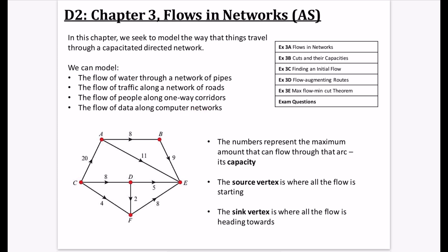It looks similar to things we've done in Decision 1, but we're talking about how things flow through the network. The numbers represent the maximum amount that can flow through an arc — its capacity. So capacities of 11, 9, 8 — nothing greater can flow through. The source vertex is where all the flow starts; we can see that C is the source because all arcs are flowing out of it.